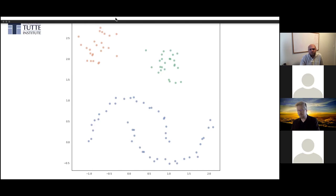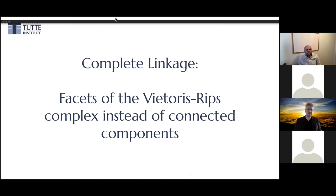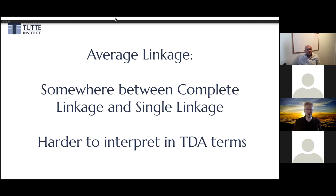Single linkage clustering has a couple of popular cousins: complete linkage and average linkage clustering are most often used in practice. Complete linkage is great — it's just the facets of the Vietoris-Rips complex instead of the connected components. This turns your clusters from those long spindly clusters that single linkage finds into big balls, getting back to those Gaussian ball-shaped clusters we found with K-Means, but with the nice advantage of having a hierarchy. That became quite popular for a while on very small datasets, though it's quite expensive.